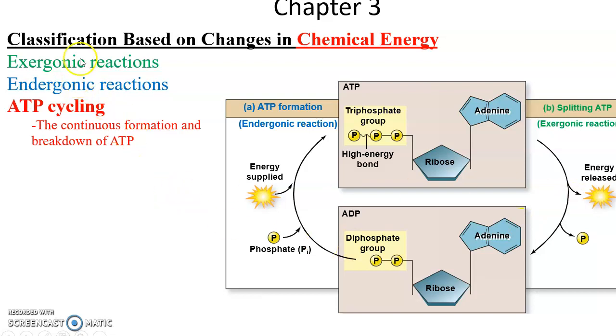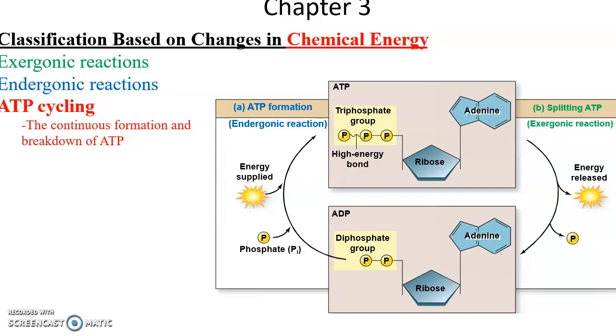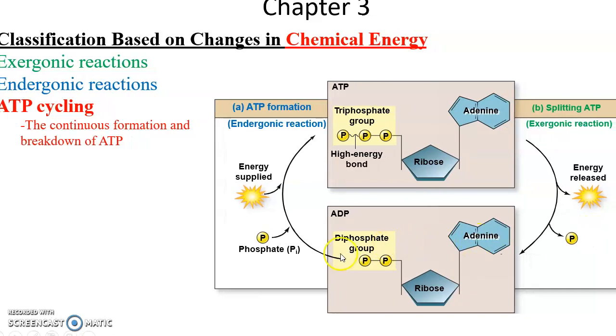ATP cycling is where you're combining exergonic reaction and an endergonic reaction to basically keep moving ATP from its triphosphate form, ATP, to its diphosphate form, ADP. Basically gains phosphate group and energy, loses the energy and loses the phosphate group. This can be occurring in our cells all the time.